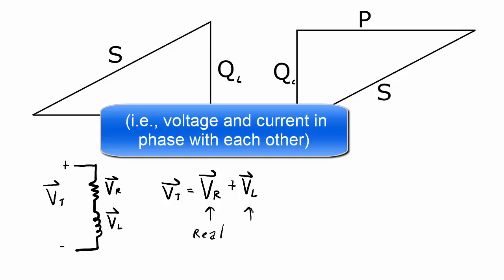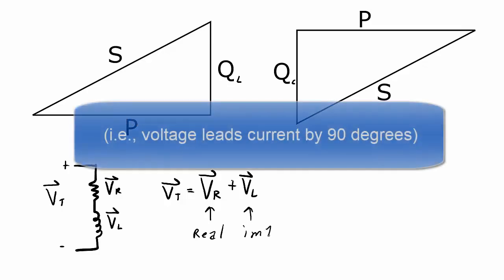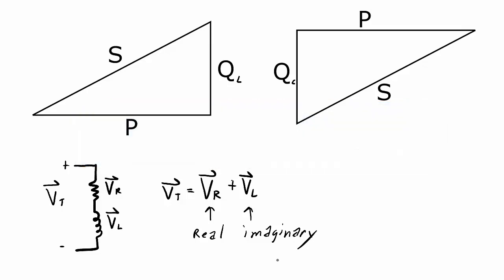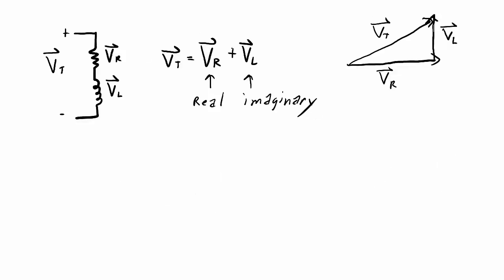The voltage across the resistor is going to be real, and the voltage across the inductor is going to be imaginary — a phase shift of 90 degrees because of the nature of the inductor. So when we draw this out as vectors, we get the voltage across the resistor in the real direction, the voltage across the inductor in the imaginary direction, and the sum of those two vectors gives us the total voltage, which creates a triangle.